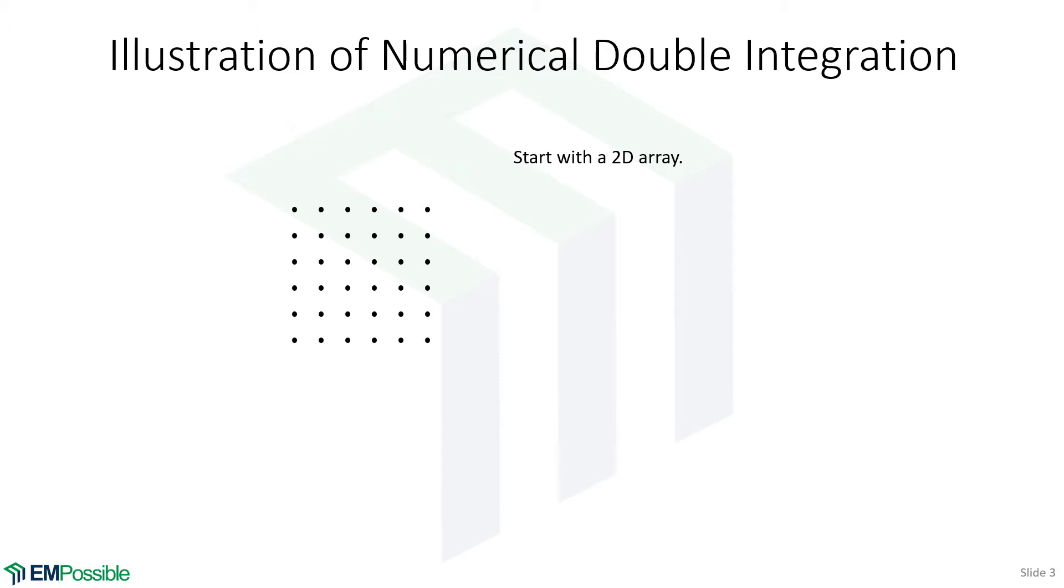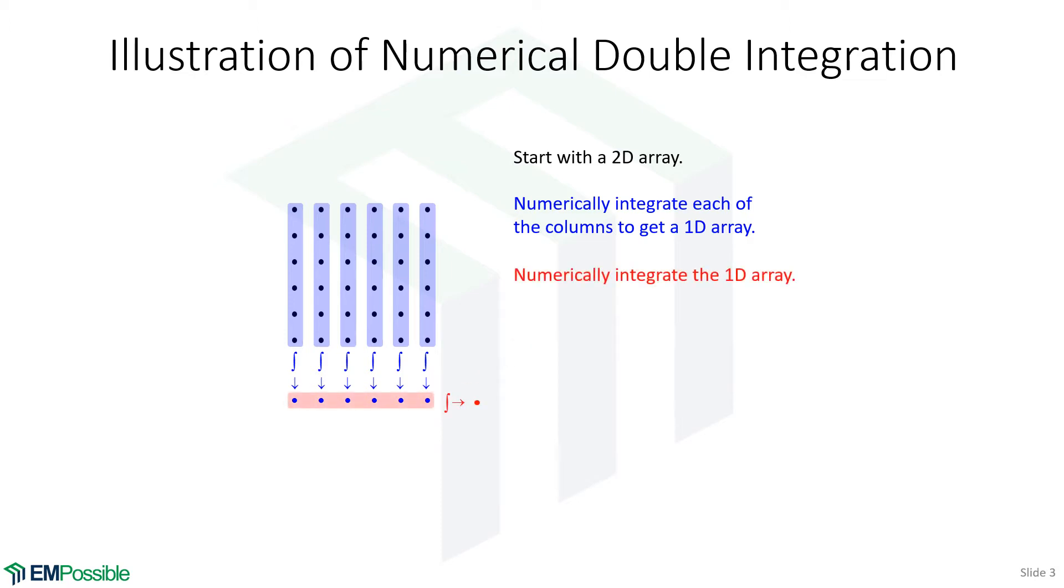So trying to visualize this a little bit more. So we have a two-dimensional array. The first thing we might do is perform a bunch of one-dimensional integrations, and we come up with an array of numbers. We now have a one-dimensional array, and each number, this particular number in the array, comes from a numerical integration through our two-dimensional array vertically. And so all these one-dimensional numerical integrations going vertically gives us a horizontal 1D array of numbers.